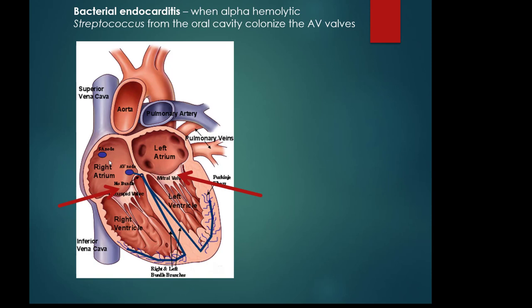Leaky valves increase your risk of bacterial endocarditis because bacteria in the bloodstream constantly backwash over those valves — from the ventricle back to the atrium — and eventually they colonize that valve and cause endocarditis. Endocarditis is a serious, potentially fatal disease that creates yellow plaque-like nodules on the AV valves. Those nodules can break off, enter the bloodstream, and act like a clot, causing a stroke or heart attack. The risk is much higher if your atrioventricular valves are leaky.